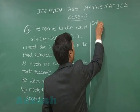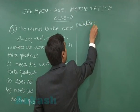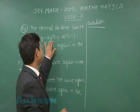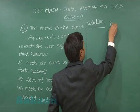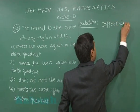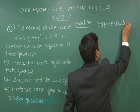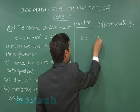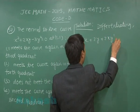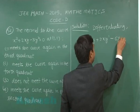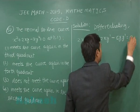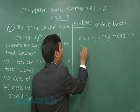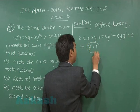On differentiating x² + 2xy − 3y² = 0, we get 2x + 2y + 2x·(dy/dx) − 6y·(dy/dx) = 0. Substituting x = 1 and y = 1, we obtain dy/dx = 1.